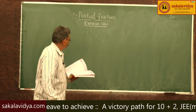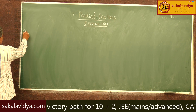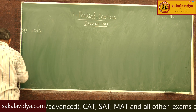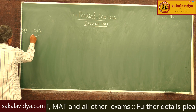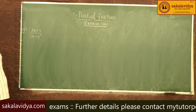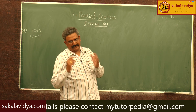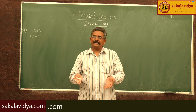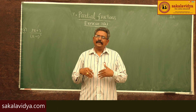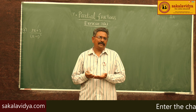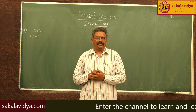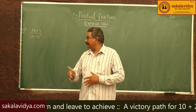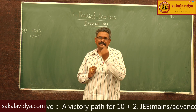Fourth problem: resolve (2x + 3) / (x-1)³ into partial fractions. This problem can be done in 2 ways. The standard way gives A/(x-1) + B/(x-1)² + C/(x-1)³. But there is one easy method — substituting x - 1 = y as a single variable.